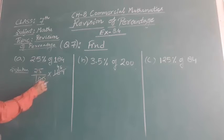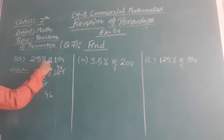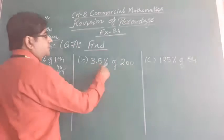Now, this 25 is equal to 25, so we get 46 is the answer. So 25% of 184 is 46. Now, 3.5% of 200.